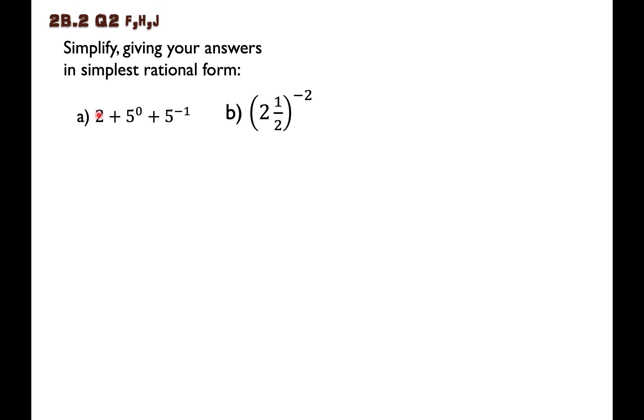To simplify these, I notice that I'm adding three different things, so let's simplify them one at a time. The two, let's just copy that down. Two is easy, I'll deal with that later. Five to the power of zero. Well, anything to the power of zero is one.